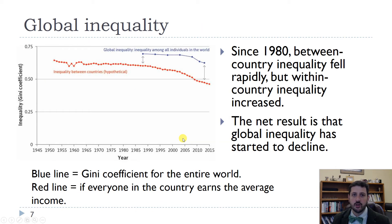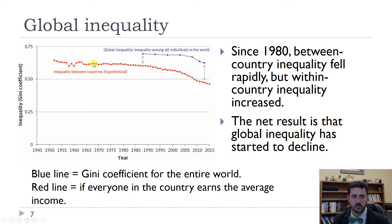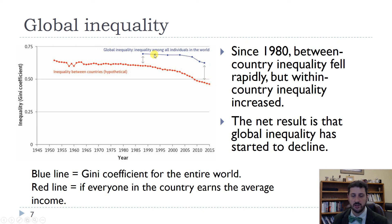If we look at global inequality overall using the Gini coefficient, the blue line represents measured inequality for all individuals around the world — still very high, but decreasing slowly. The red line shows inequality between countries, as if each person in a country earned the average income for that country — hypothetical, not real. You can see that global inequality between countries has been falling faster than actual inequality among all people in the world.